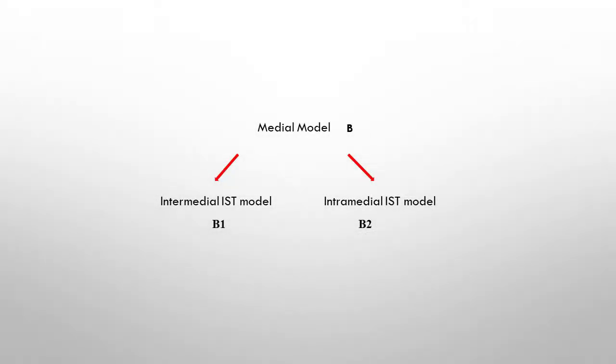The second level is the media model, which regards the specific medium of the object of study. In this case, while we are concentrating on film, intra-medial refers to patterns within the film system, whereas intermedial refers to those that belong to another media system, such as painting, opera, music, and other art forms.